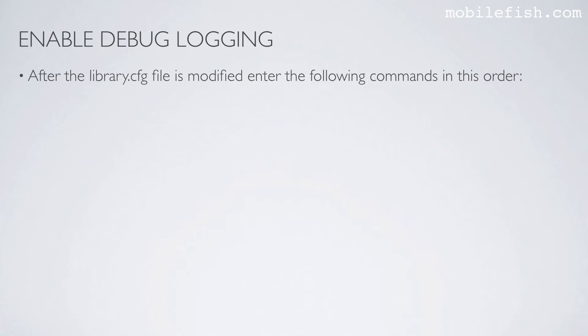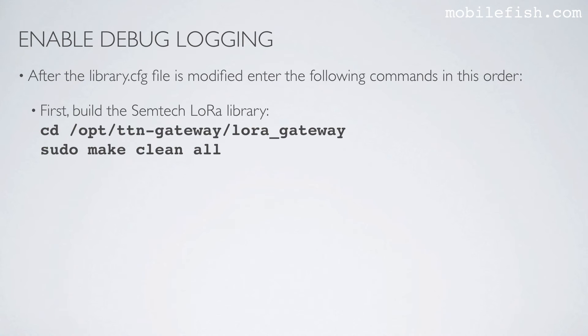After the library.cfg file is modified, enter the following commands in this order. First, build the Semtek LoRa library — enter this command, followed by this command.